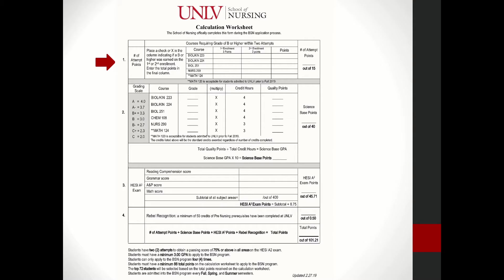The first section reflects the number of attempts on Anatomy and Physiology I and II, Microbiology, Nursing 299, and your math component. If you receive a grade of B or higher on your first attempt, you will get three points. If you withdraw, audit, or get a B minus or lower, you will need to retake the course, and a B or higher on the second attempt earns two points. If you do not receive a B or higher within two attempts, you will be ineligible to apply.